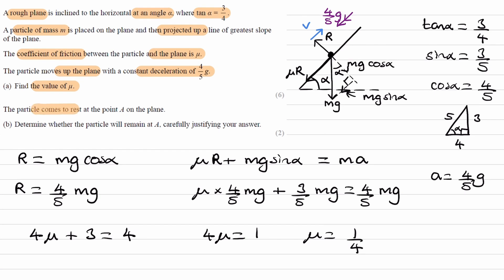For part B, the particle comes to rest at a point A on the plane. We need to determine whether the particle will remain at A. The particle was initially moving up the slope, then comes to rest. There is no longer upward motion, so friction no longer acts down the slope. Now the component of weight acts down the slope, so if the particle wants to slide back down, friction will try to oppose that desired motion and act up the slope.